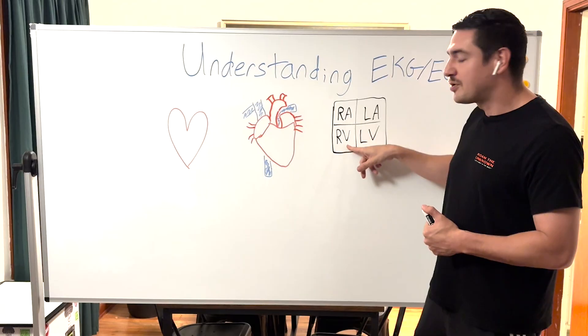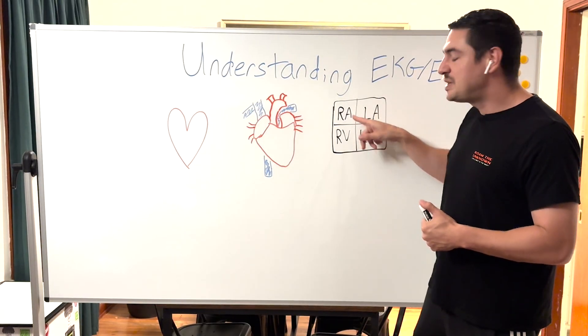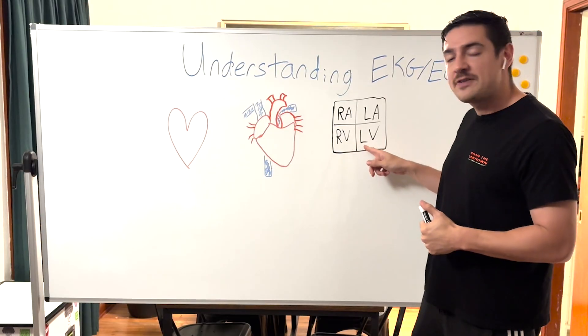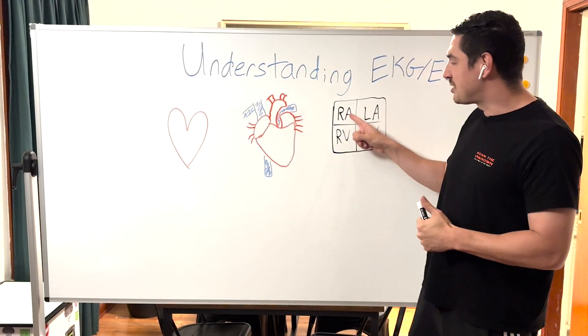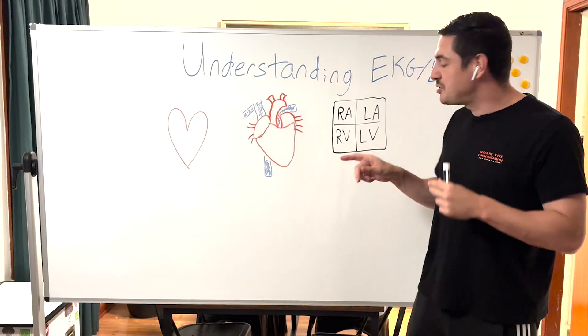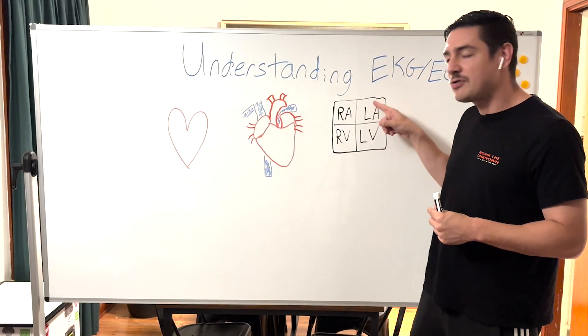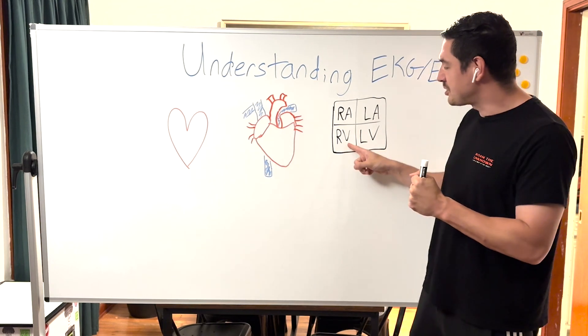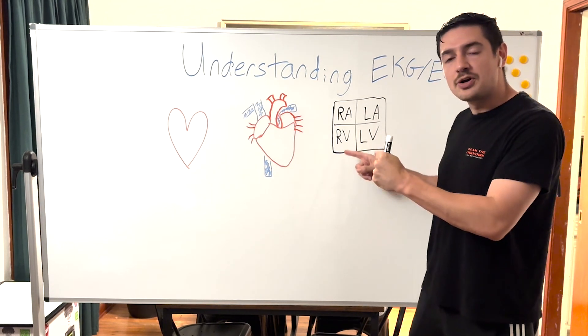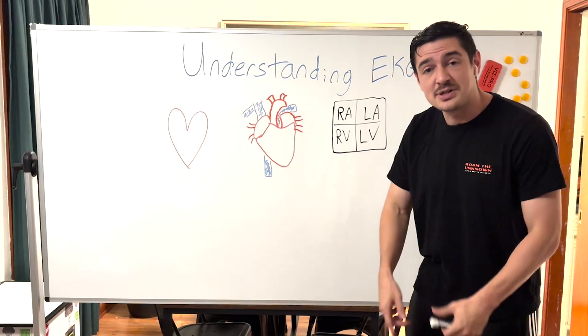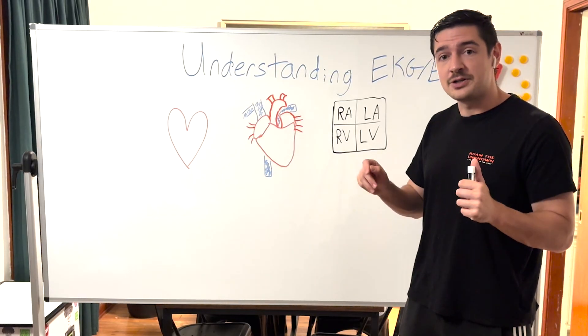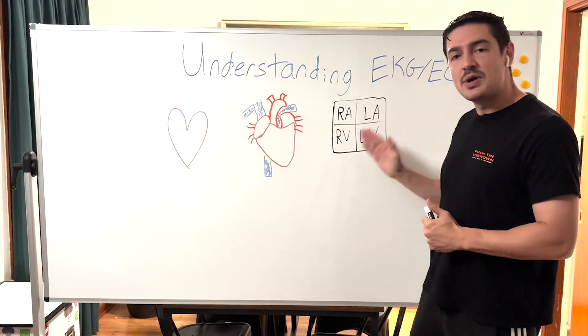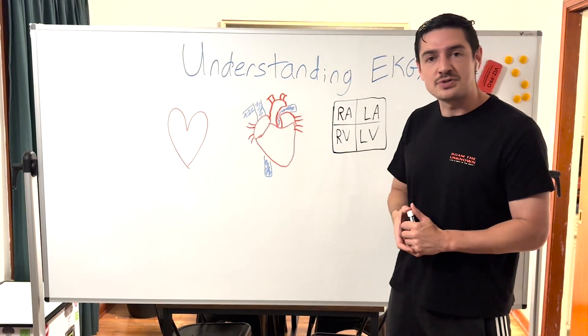Your right atrium and left atrium generally squeeze at the same time, and the right ventricle and left ventricle will squeeze at the same time. This is a really weak squeeze because they're just filling up the ventricles, but the ventricles squeeze quite a bit harder. This is going to be relevant whenever we're interpreting four leads and twelve leads later.